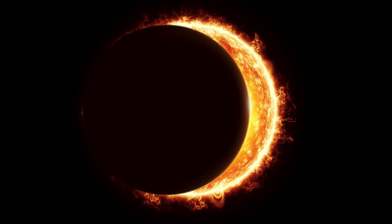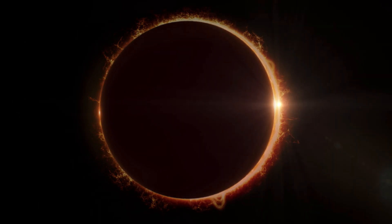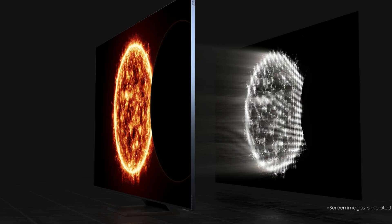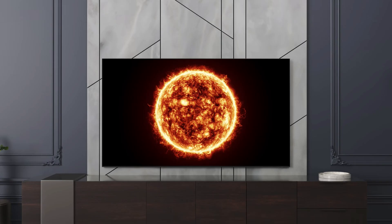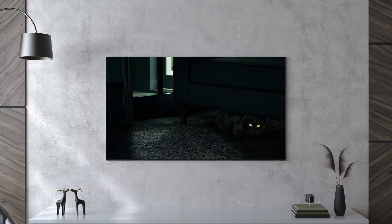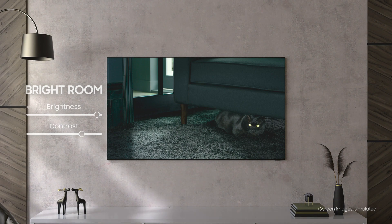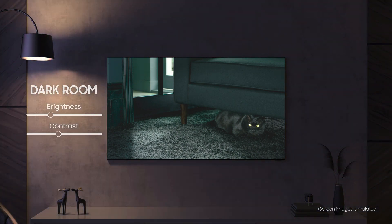Additionally, the implementation of direct full-array backlighting takes advantage of more precise control over the LEDs within the backlight's source, with local dimming to deepen overall contrast across the panel. This also further enhances modes like adaptive picture control, which can allow the TV to respond to ambient room lighting to adjust a scene accordingly, for the best brightness and contrast in any setting.